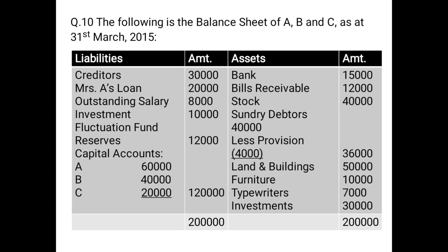The provision of 4,000 will be transferred separately on the credit side of the realization account: by provision for doubtful debts 4,000. We will not transfer the net value of 36,000. Then land and buildings transferred on the debit side: to land and buildings 50,000. Furniture: to furniture 10,000. And similarly typewriters: to typewriters 7,000, and investments: to investments 30,000.